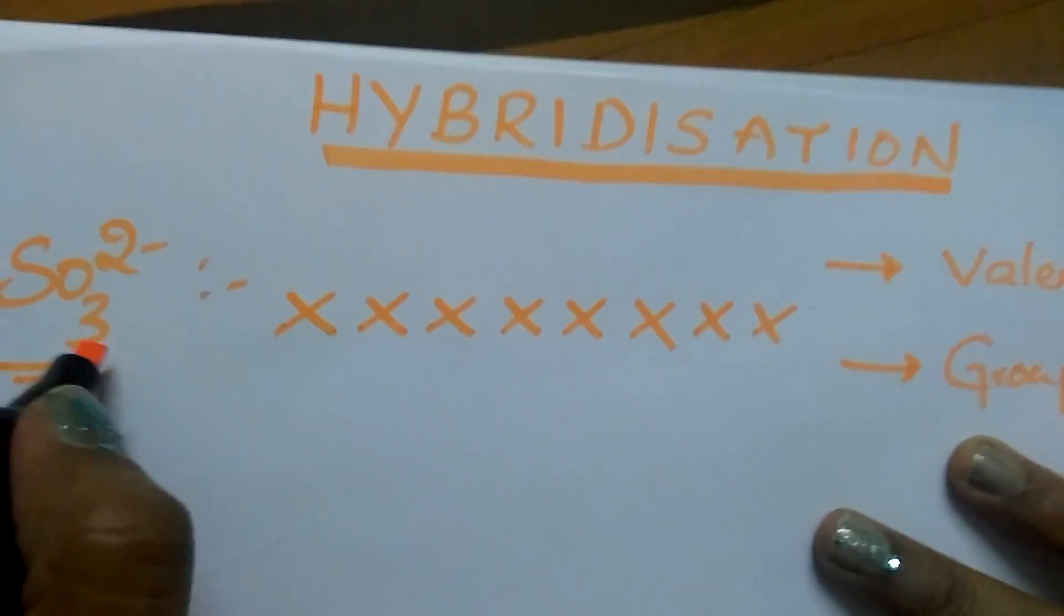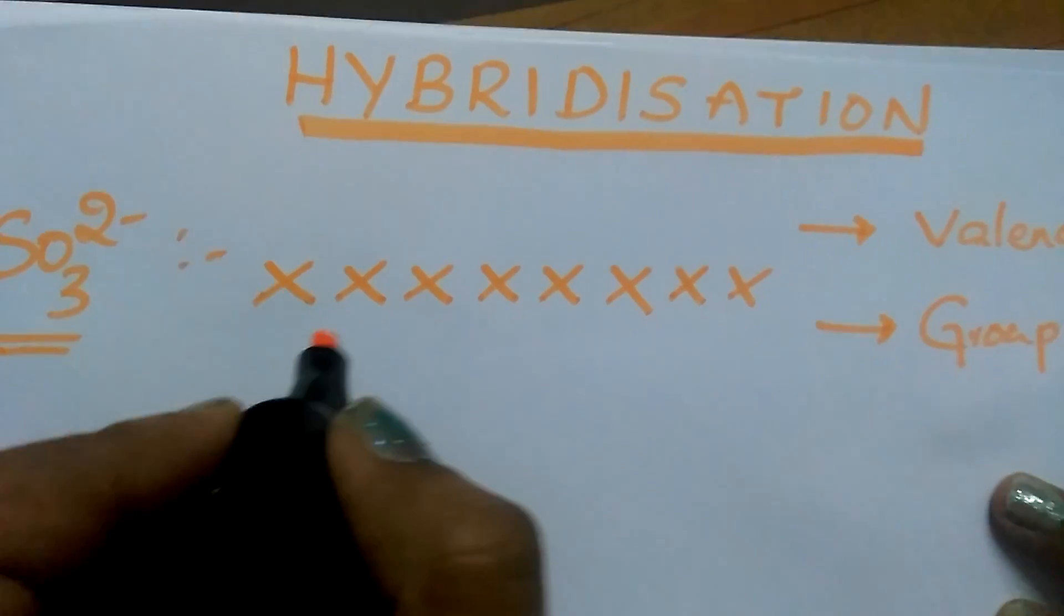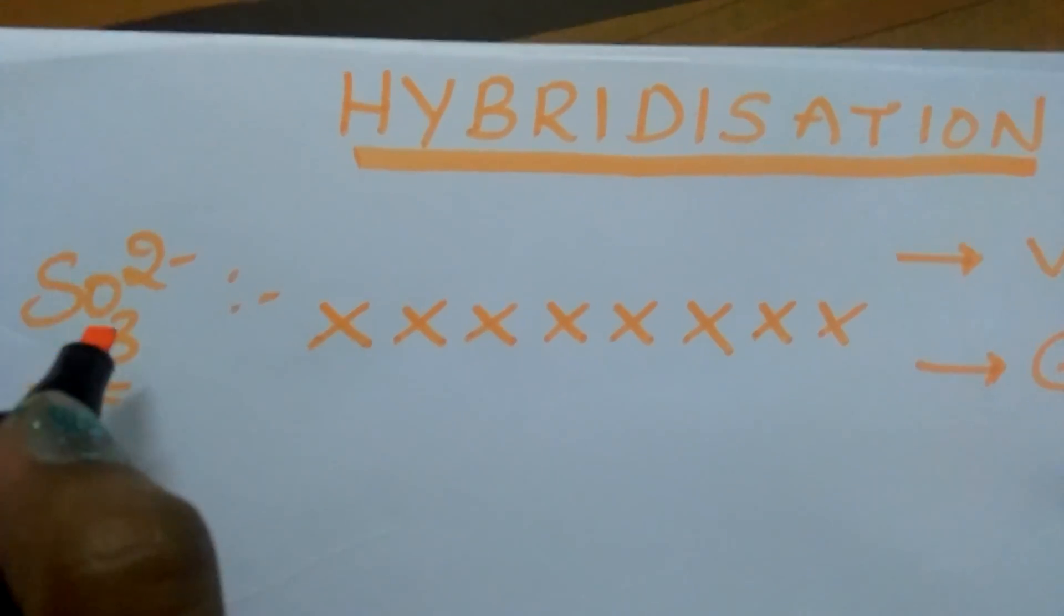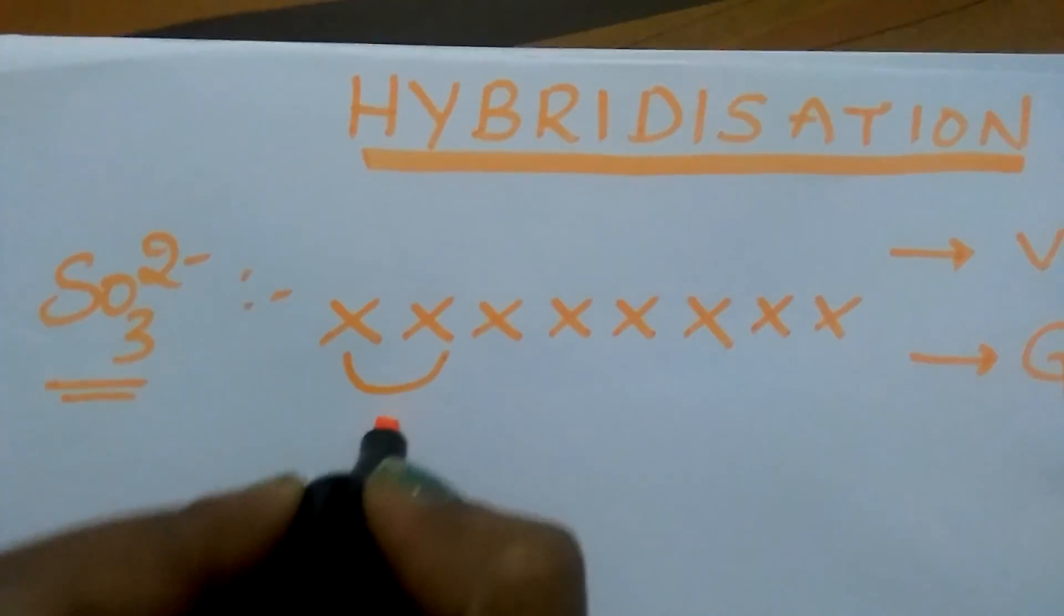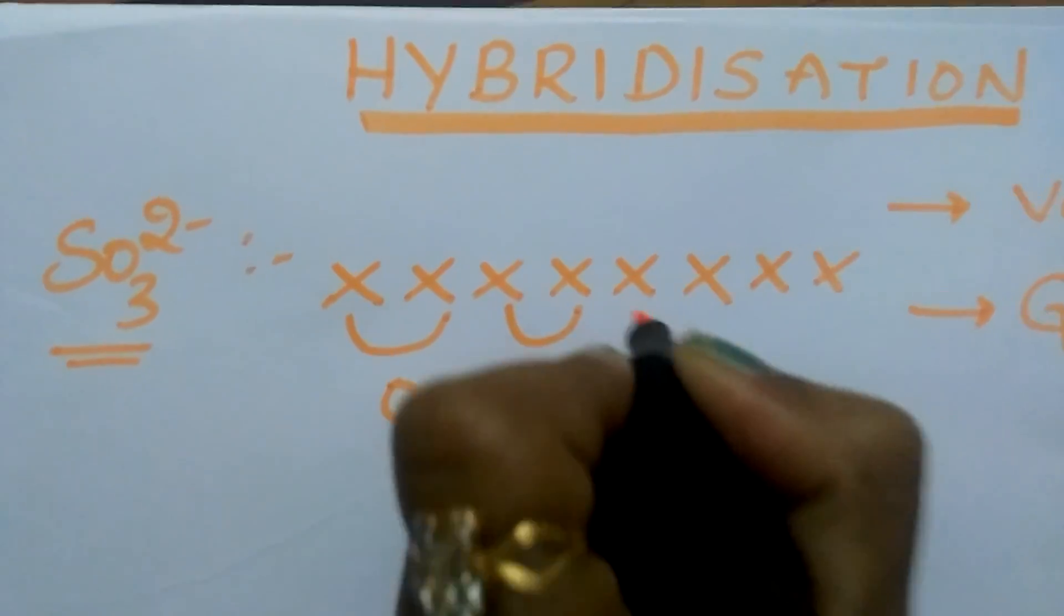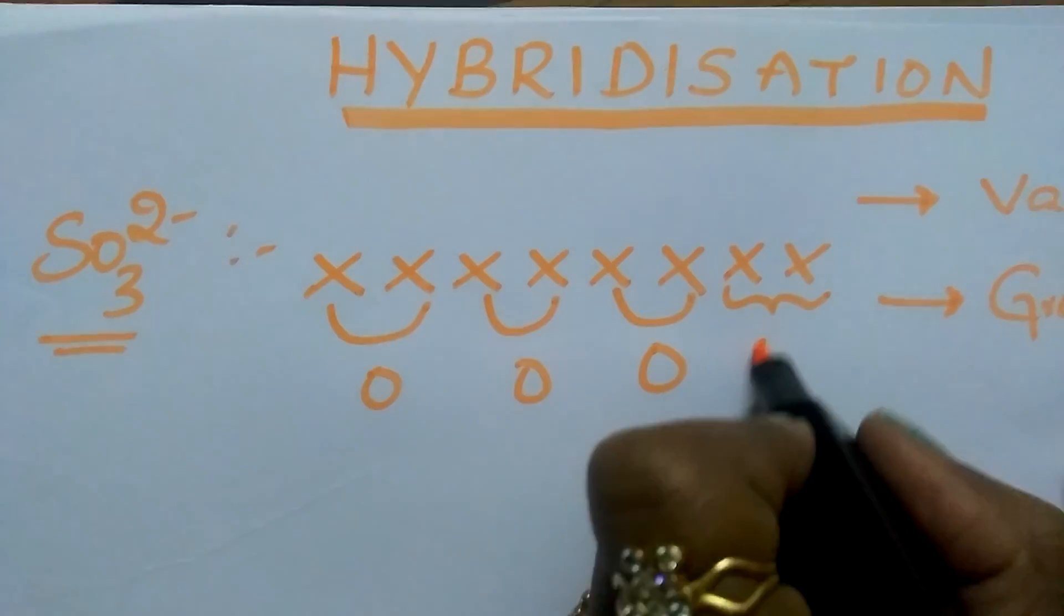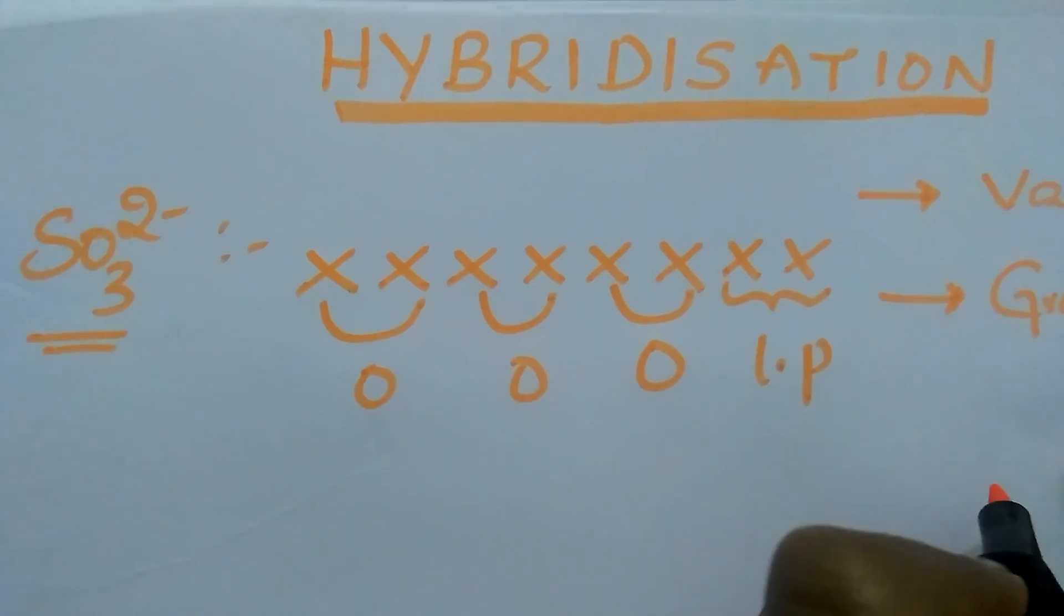Oxygen valency is 2. It gains 2 electrons in order to acquire the noble gas configuration. So write 2. And these 2 electrons are not participated, count as lone pair of electrons.